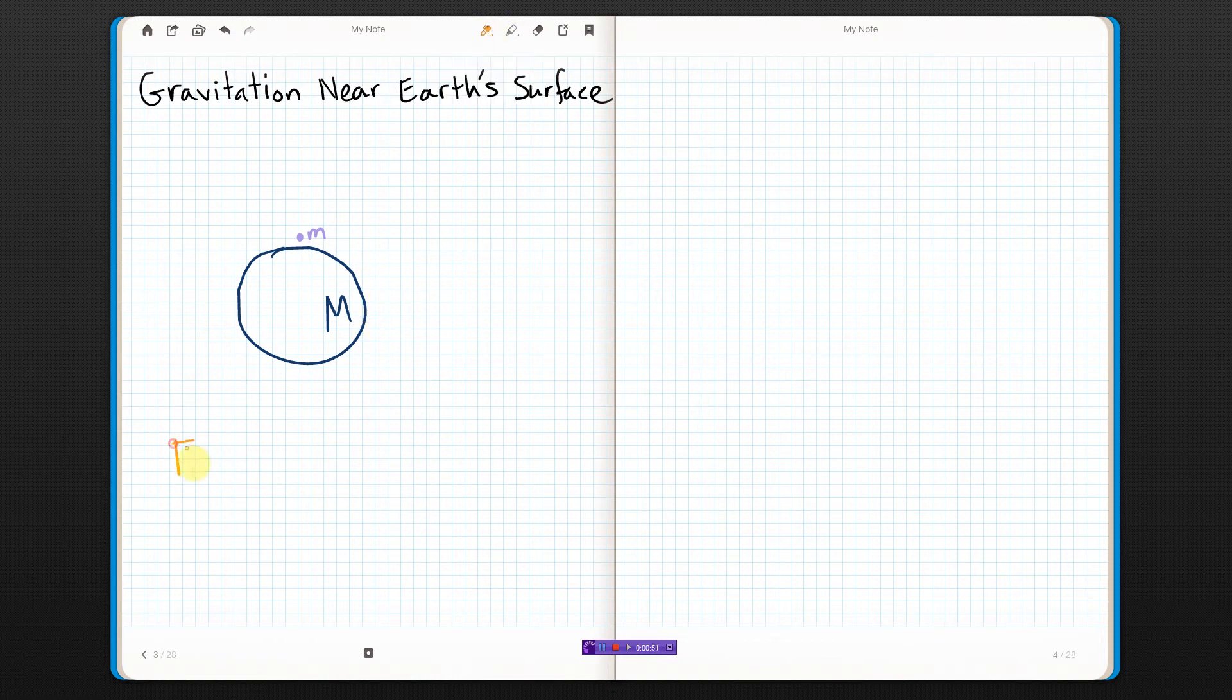The force of gravity between the two should be big G times mass one is big M, mass two is little m, divided by the distance between them. If the particle is released, it will fall toward the center of the Earth, so it's being pulled down toward the center with this Fg.